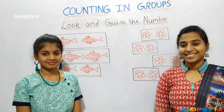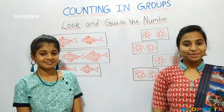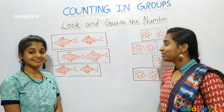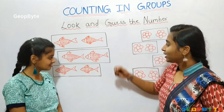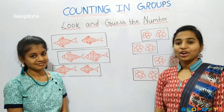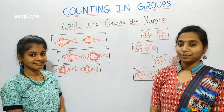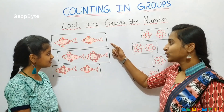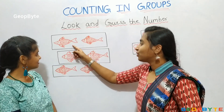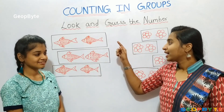Hey kids, now let us go with few more examples. See this example. We have 1, 2, 3 — three pairs of fishes. Now, let us count them. First, let us go with this row. We have 1, 2 — two fishes in this row.